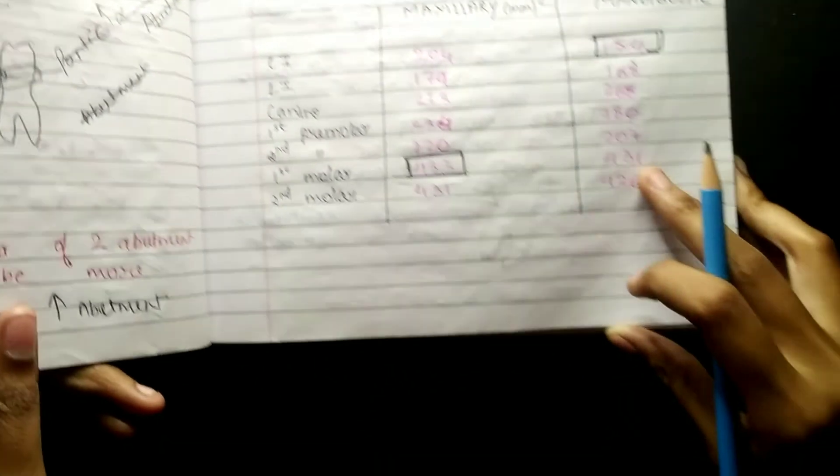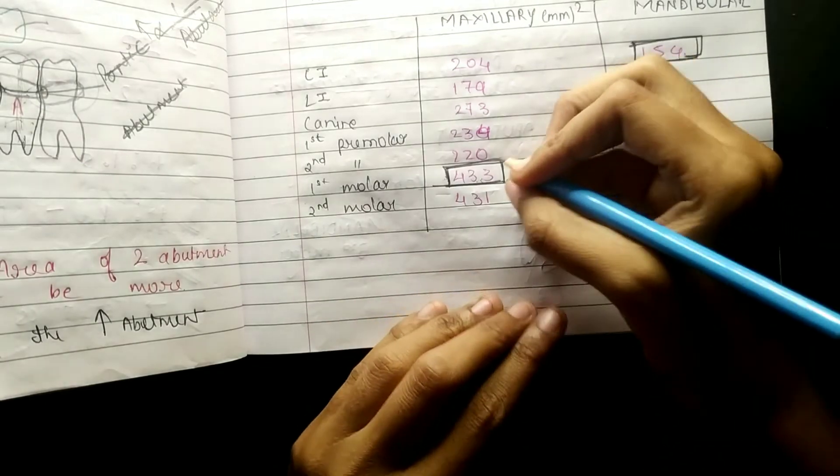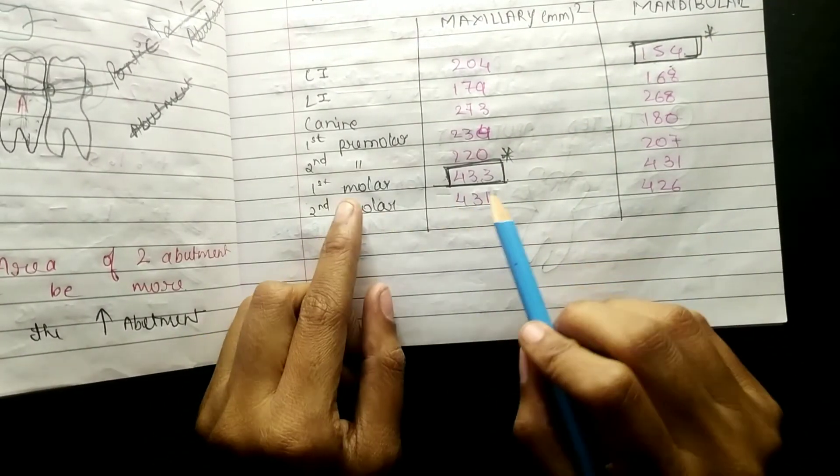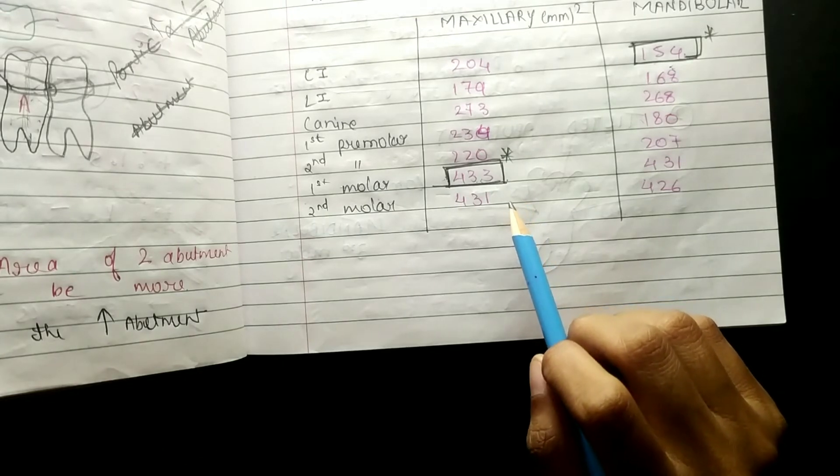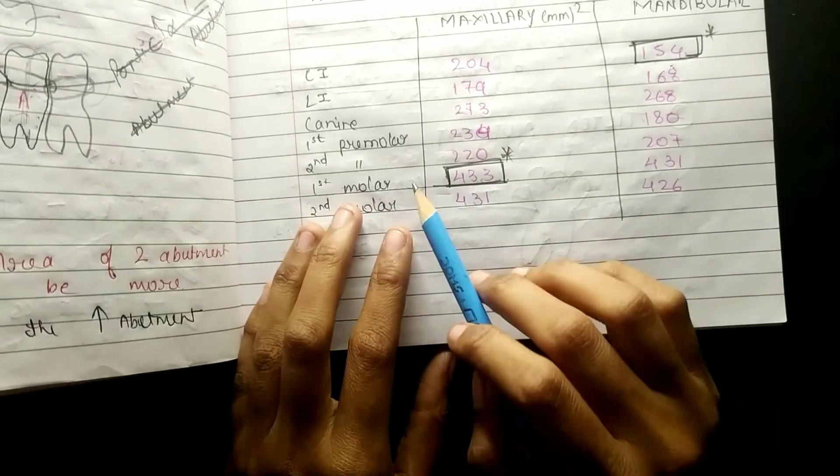If you talk about root surface area, this is a value given. You have to remember two things, because MDS has been asked and NEET has been asked, and this is the value given: which is the greatest area and which is the least area for root surface area.